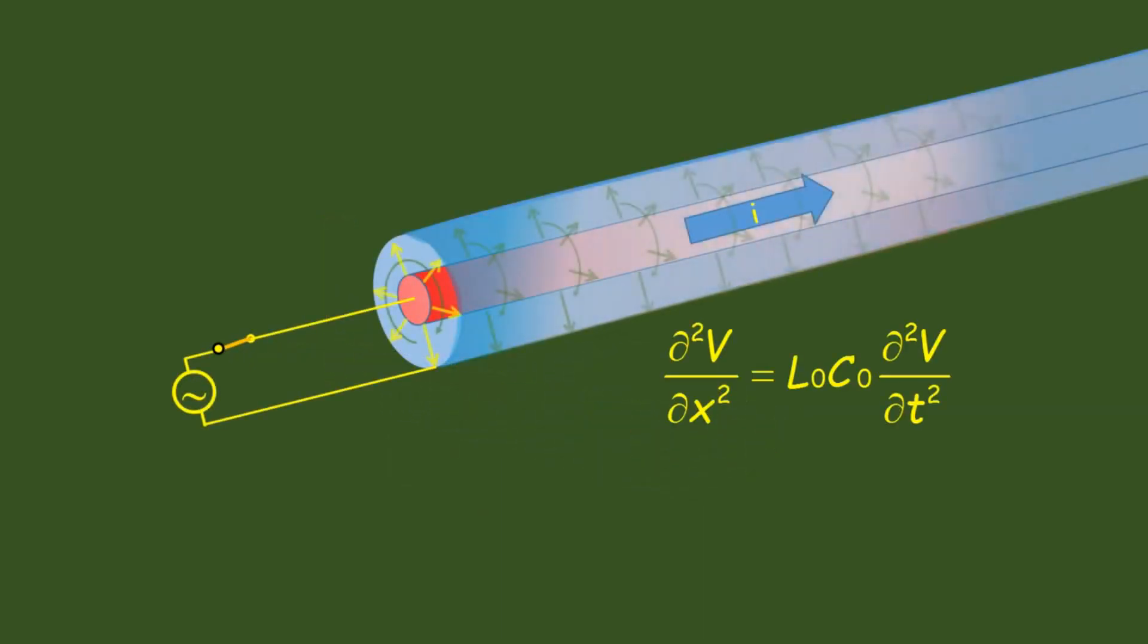In the coax, a source drives a current through the circuit, causing a current wave and at the same time, a potential wave.